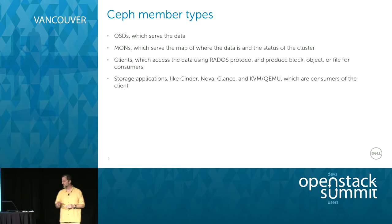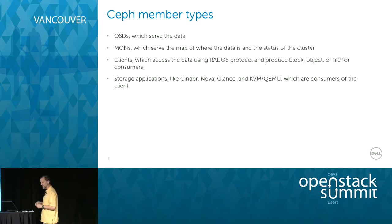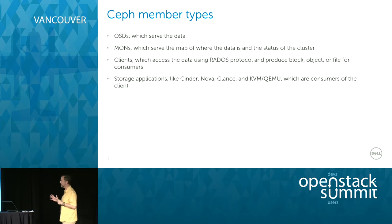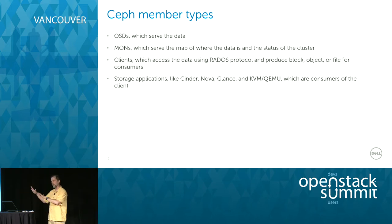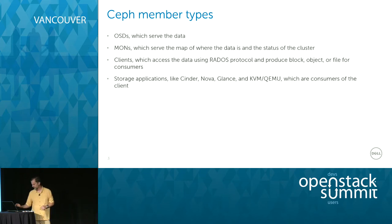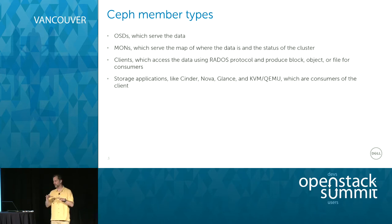Just for terminology: first, there's the object storage daemon (OSD), which is basically a Linux daemon that serves up a disk's worth of data. There's also a monitor. The interesting thing about Ceph is that unlike a lot of storage technologies, the clients know where the data is — this is what allows it to scale to large sizes, and parts of your cluster can be down while you still know how to get the rest. Clients in Ceph talk the RADOS protocol. The storage applications in OpenStack — Cinder, Nova, Glance, and KVM — are users of that client.